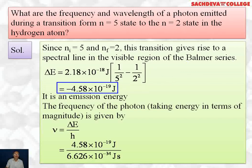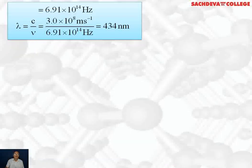The answer will come out to be -4.58×10⁻¹⁹ joules. The negative sign shows it is an emission energy because from higher energy level, the electron is jumping to lower energy level. The frequency of the photon, taking energy in terms of magnitude, is given by ν = ΔE/h. That is 4.58×10⁻¹⁹ J divided by Planck's constant 6.626×10⁻³⁴ J·s. The answer comes out to be 6.91×10¹⁴ Hz.